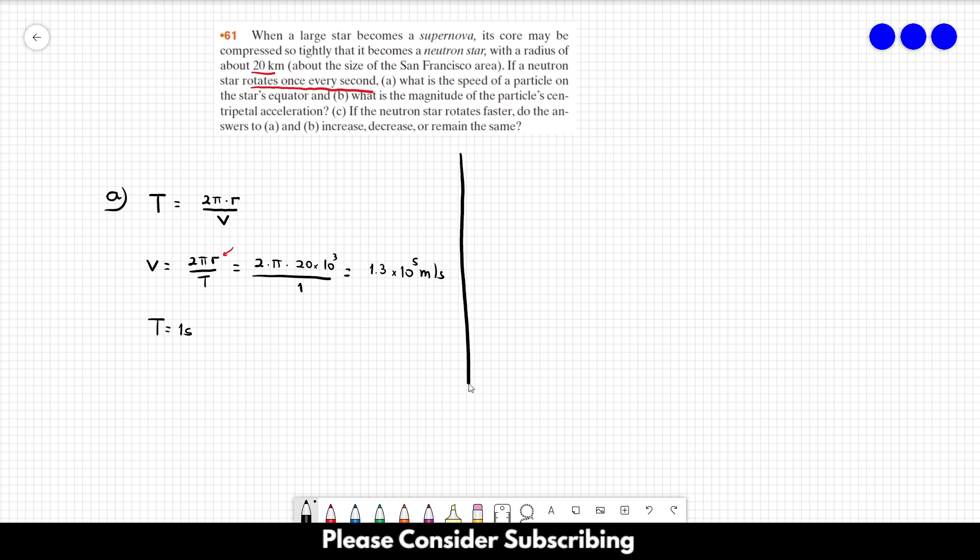For letter B, we want the centripetal acceleration, and the centripetal acceleration can be calculated by v squared over r.